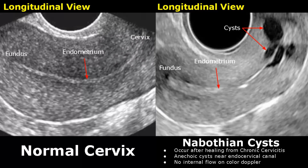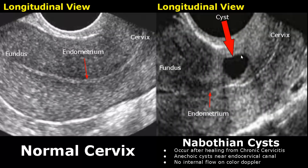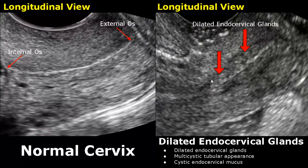We can see three cysts here. Here is another image showing a single Nabothian cyst near the endocervical canal. Dilated endocervical glands will have a multicystic tubular appearance. This appearance is also called cystic endocervical mucus. You can see a difference in the appearance of the cervical canal.